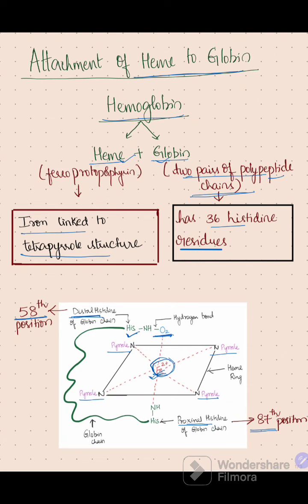In hemoglobin, heme and globin are attached to each other through the distal histidine and proximal histidine molecules.